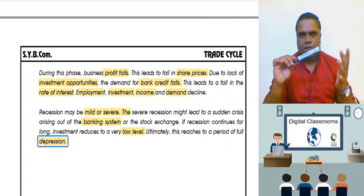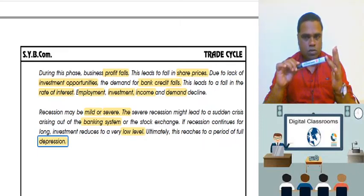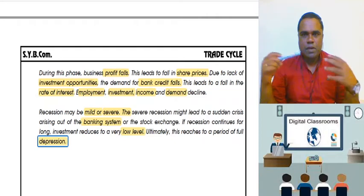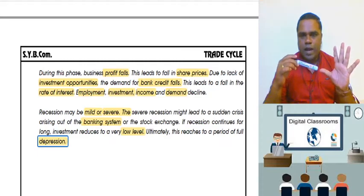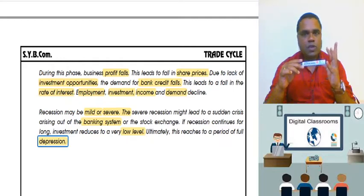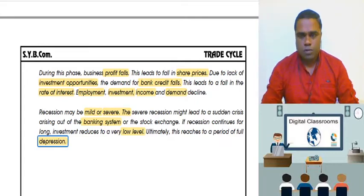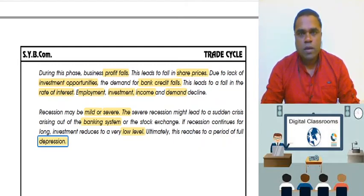For your short note on prosperity, you can use these key words: output, employment, income, demand, prices, bank credit, rates of interest, GDP growth. Start by defining what prosperity is. Then write: high level of output, high level of employment, high income levels, high demand in the market, inflation, expansion of bank credit and money supply, rate of interest increases, GDP growth, overall optimism in the economy, and the economy operates at its highest capacity.